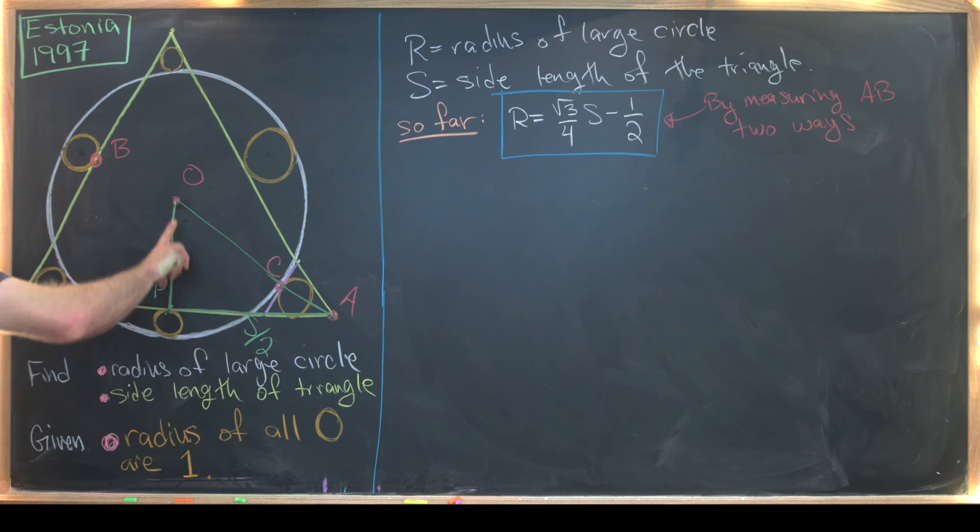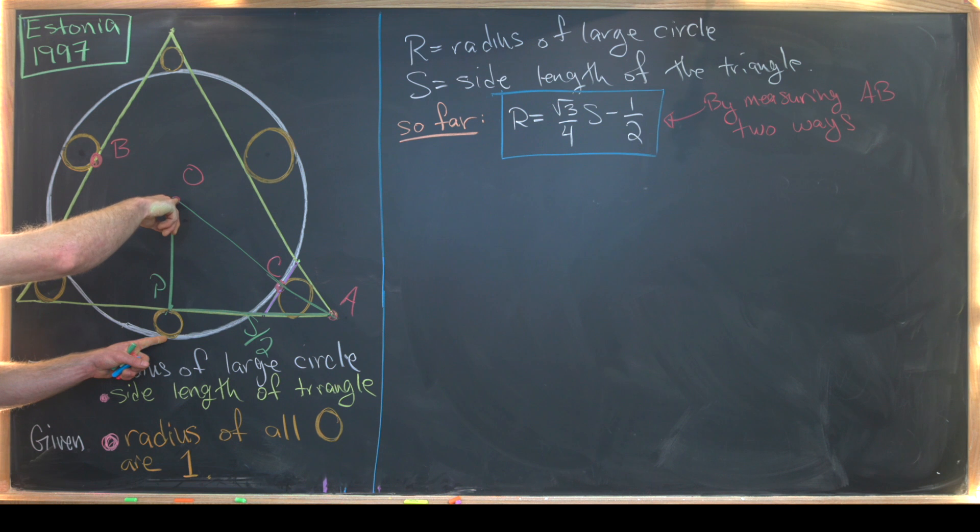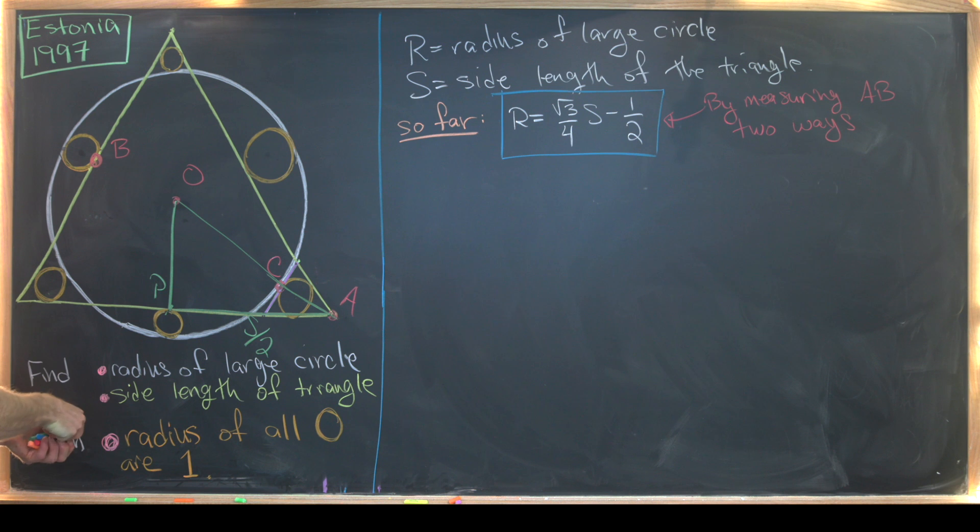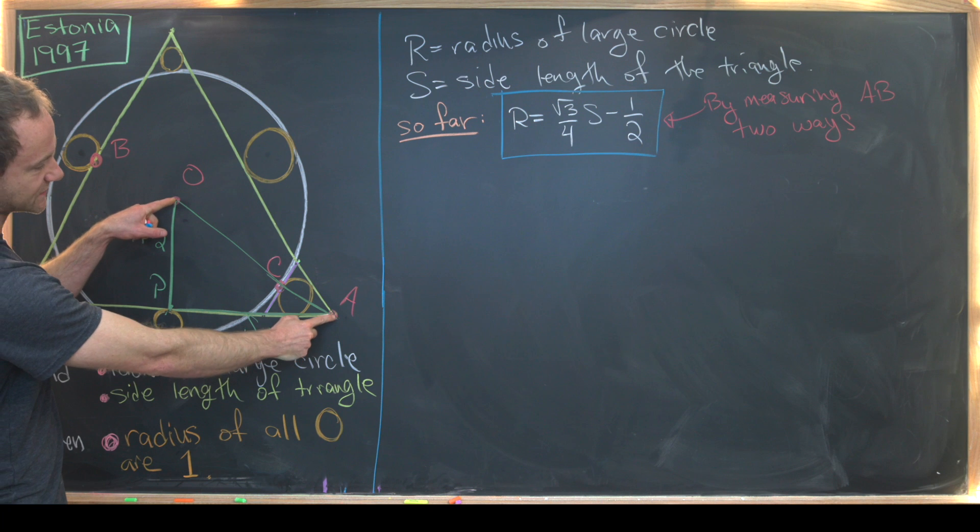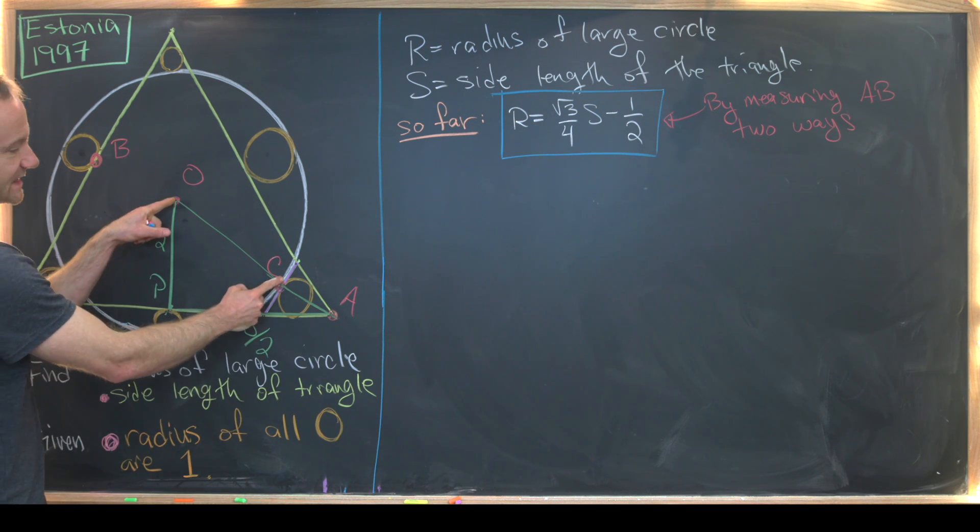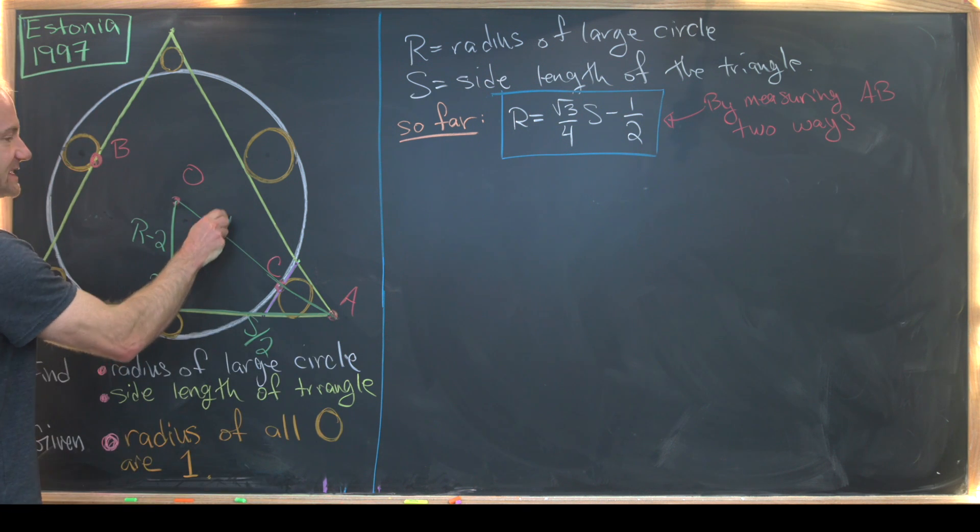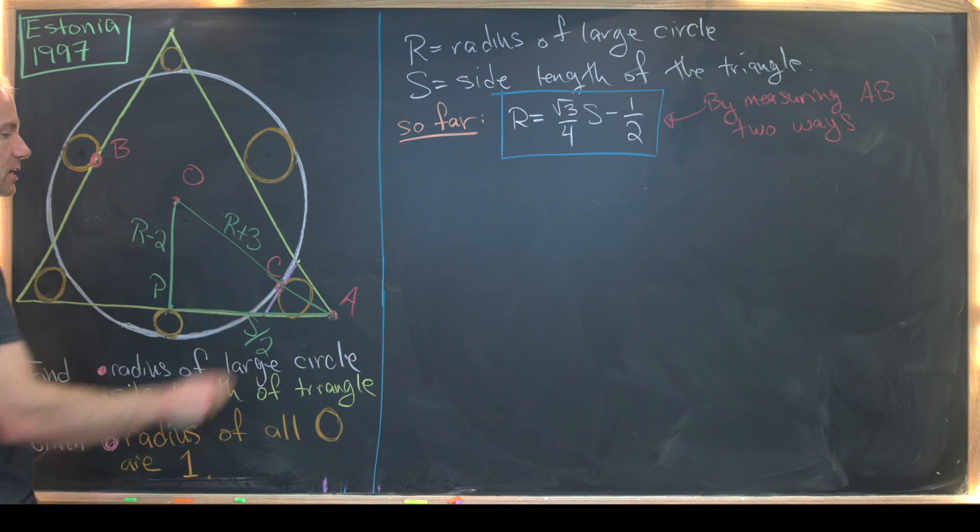Next, we can measure this distance from O to P pretty easily as well. So notice that is going to be equal to the radius of the circle minus two units because we've got this small circle here. So I can put this as equal to R minus two. Then we can also easily calculate this length. Well, what's that going to be? We get the radius of the circle plus AC. But on the last board, we determined that AC was three. So here we get R plus three.